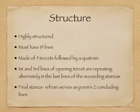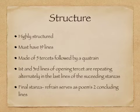Structure. The Villanelle poem is very highly structured. First of all, it must have 19 lines, and it is made of five tercets followed by a quatrain. The first and third lines of the opening tercet are repeating alternately as the last lines of the succeeding stanzas, and the final stanza refrain serves as the poem's concluding lines.